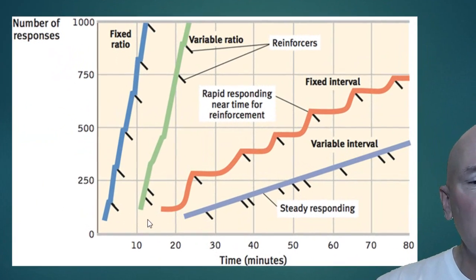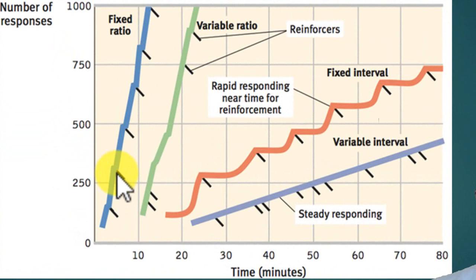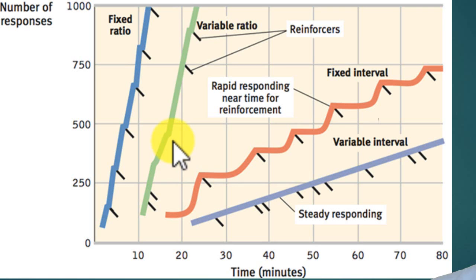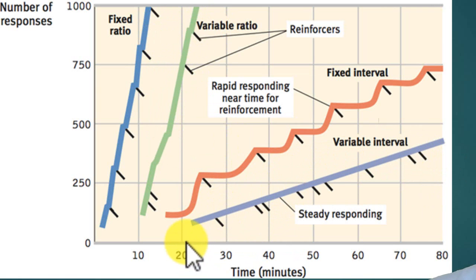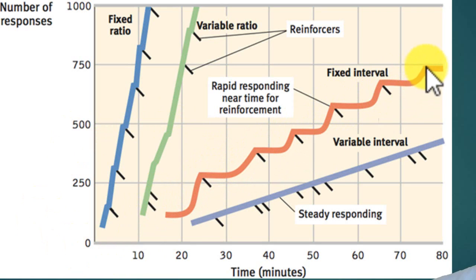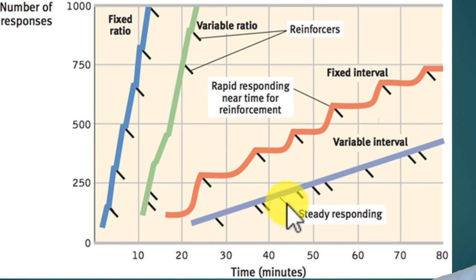The schedules have differing effects. With fixed ratio, like the car salesman example, responding increases as you get closer to the reinforcement. Variable ratio produces a steady, high rate of responding. For fixed interval — say a monthly quiz — behavior increases as the time approaches, then levels off. Variable interval, like a pop quiz that could come any week, produces a steady rate of responding because you stay ready all the time.